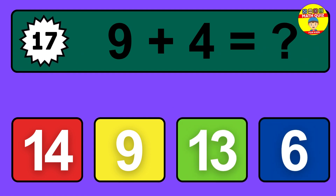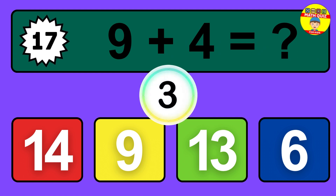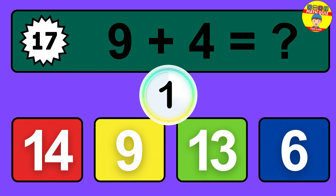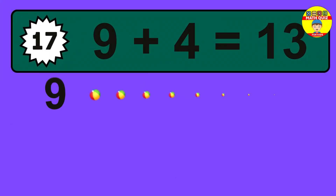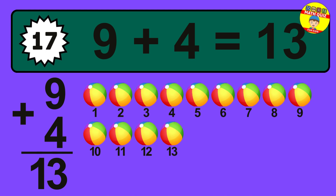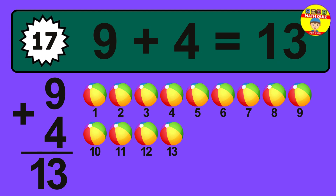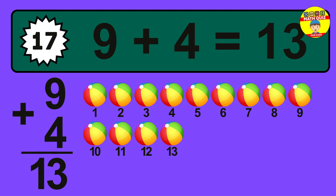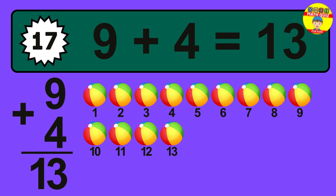Question 17. 9 plus 4 equals what? The answer is 9 plus 4 is 13. Let's count it: 1, 2, 3, 4, 5, 6, 7, 8, 9, 10, 11, 12, 13.